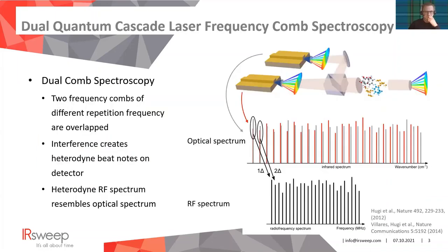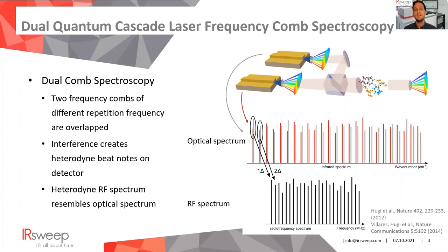So what is dual quantum cascade laser frequency comb spectroscopy? At the heart of the technique are quantum cascade laser frequency combs. These are semiconductor laser sources that emit in the mid-infrared spectral regime, and rather than emitting a single wavelength, they emit over a broad spectral range at very well-defined frequencies. The spectrum of such a frequency comb is shown here — we have very well-defined lines.